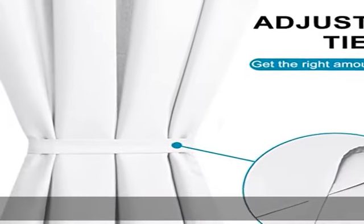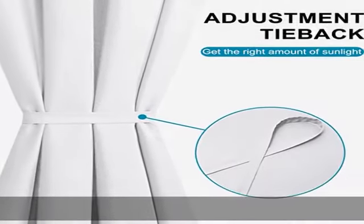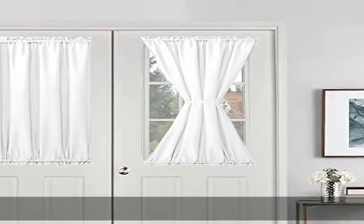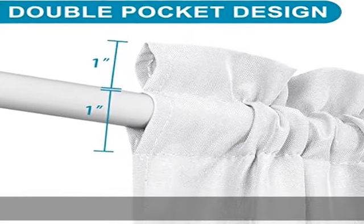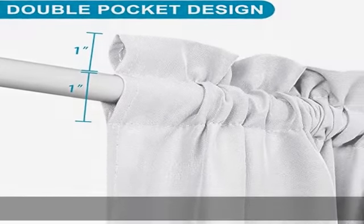Each piece comes with matching tieback. Premium Fabrics: Hyacin door curtains are made of 100% chemical free, premium quality durable polyester fabric, which is moderately thick. It provides enough privacy while letting some light in. Each door curtain panel is made with quality stitching and all seams and hems are aligned.